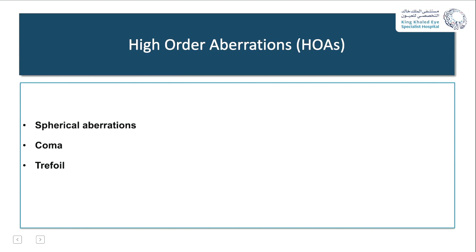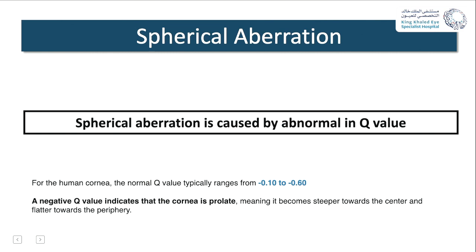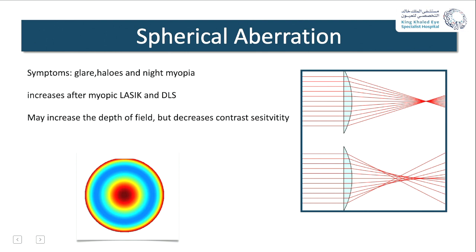High order aberrations are divided into spherical aberrations, coma, and trefoil. Spherical aberration is the most prominent and can be positive or negative. It is caused by an abnormal Q value of the cornea. For the human cornea, the normal Q value ranges between minus 0.1 and minus 0.6. A negative Q value indicates the normal prolate corneal shape. Any change in the Q value outside normal will alter spherical aberrations. Symptoms include glare, halos, and night myopia, and it tends to increase after myopic LASIK or in dysfunctional lens syndrome. It may increase depth of field and decrease contrast sensitivity.